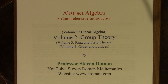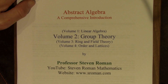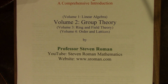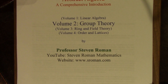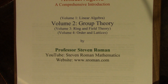Volume two of this series is group theory — that's this course we're talking about now. Subsequently, there will be volume three, which is ring and field theory, and volume four, which is order and lattices. The textbooks for linear algebra and group theory are available now on my website, www.sroman.com.